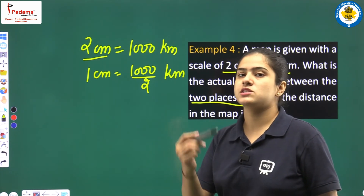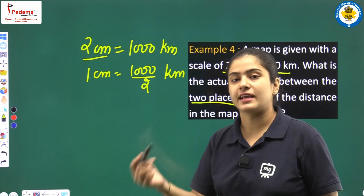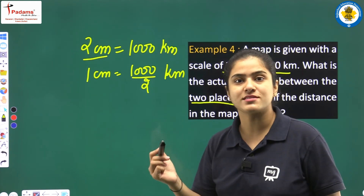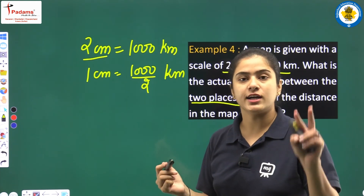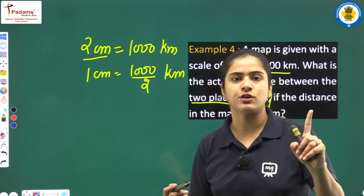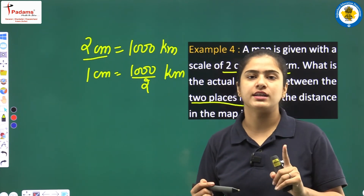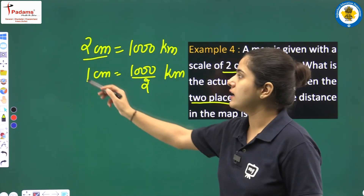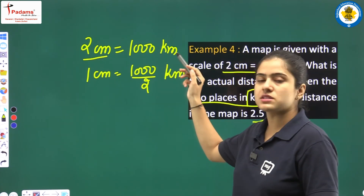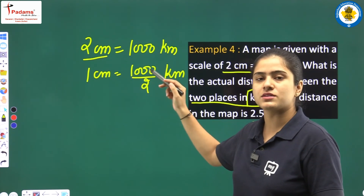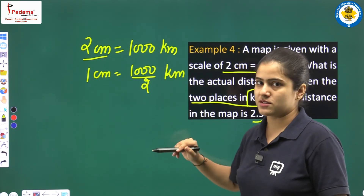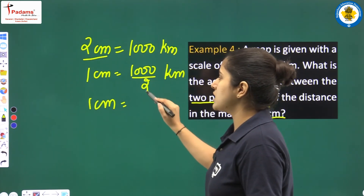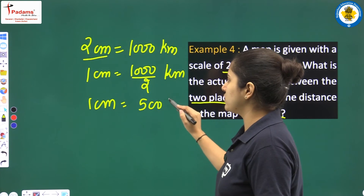If 2 cm equals 1,000 km, then 1 cm equals 1,000 upon 2, which is 500 km. If 1 cm is 500 km, then 2.5 cm equals 500 into 2.5.